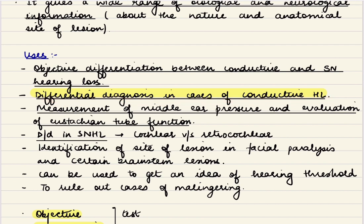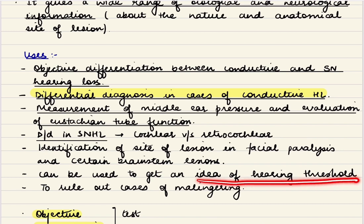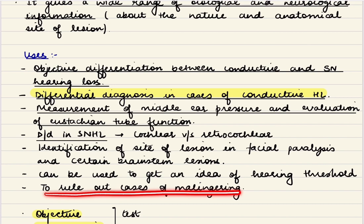Also, we can measure the middle ear pressure and evaluate the eustachian tube function. Differential diagnosis of sensorineural hearing loss cases can also be done — whether the lesion is cochlear or retrocochlear. It can also help us in identifying the site of lesion in facial palsy or other brainstem lesions, and we can objectively have an idea about the hearing threshold. Additionally, malingering cases can also be ruled out through this test.